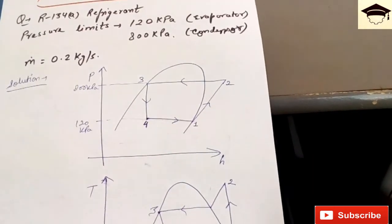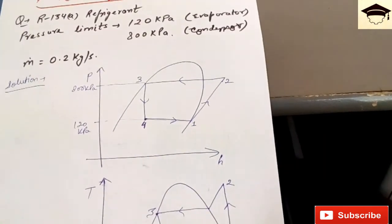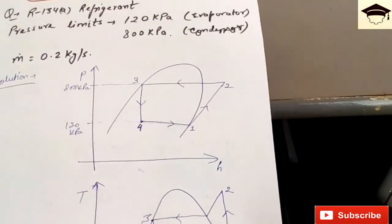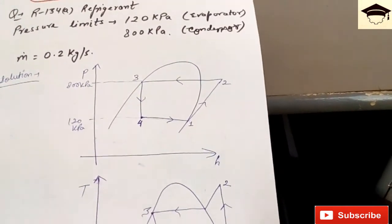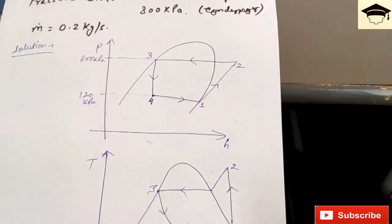So you move from point 1 along the constant entropy line because entropy is same at point 1 and 2. Wherever this line intersects the line of 800 kilopascal, that will be point 2.